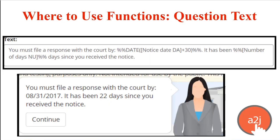You can also use functions in the question text itself. In this example, the end user has told the software when they received the notice date, and then in the back end, in the question text, the author has done the notice date plus 30, and then turned that into a date to display to the end user using the date function. So you can use math here in the question section to figure out when they have to file a response based on 30 days after the notice date, and then convert that to an actual date to tell them when they must file the response by.